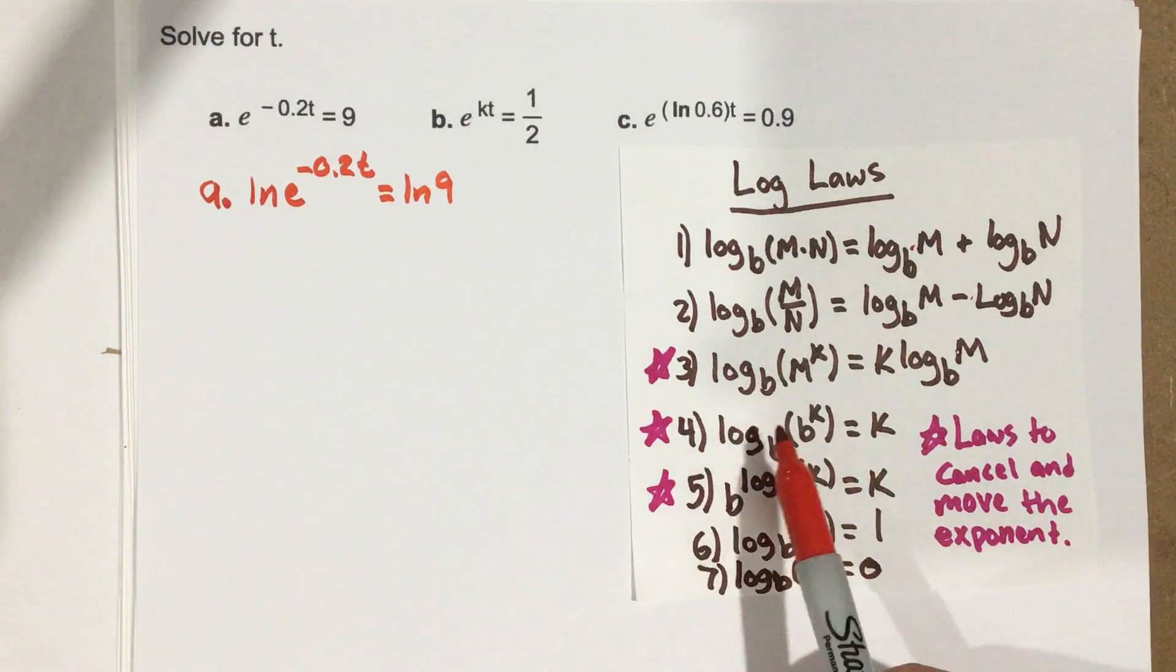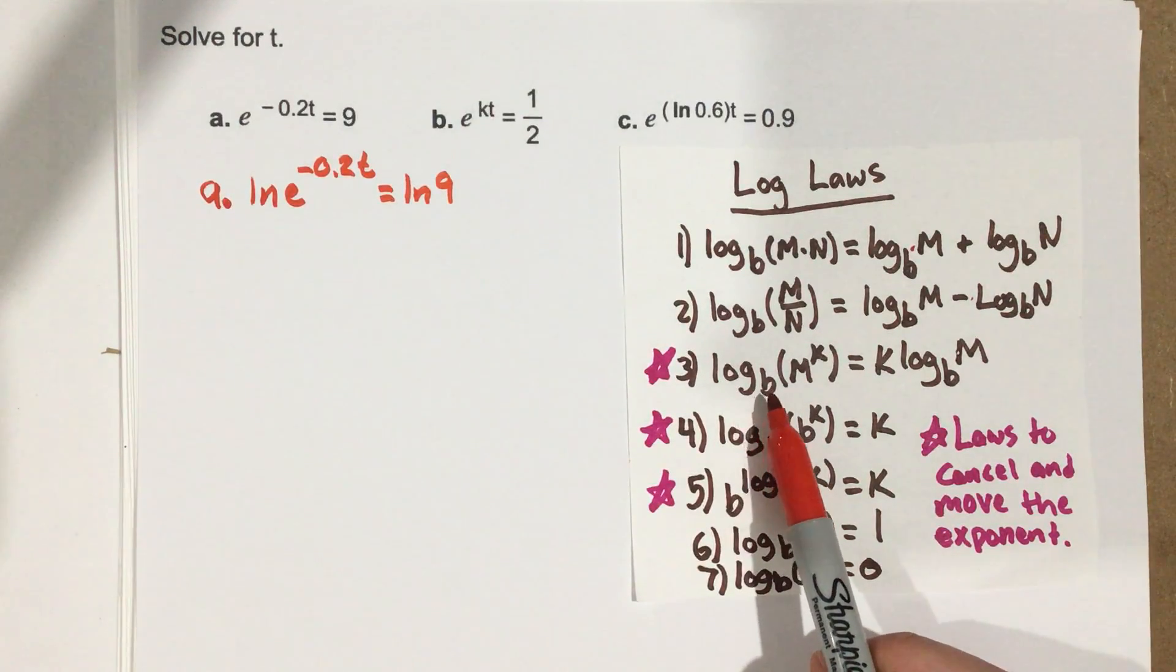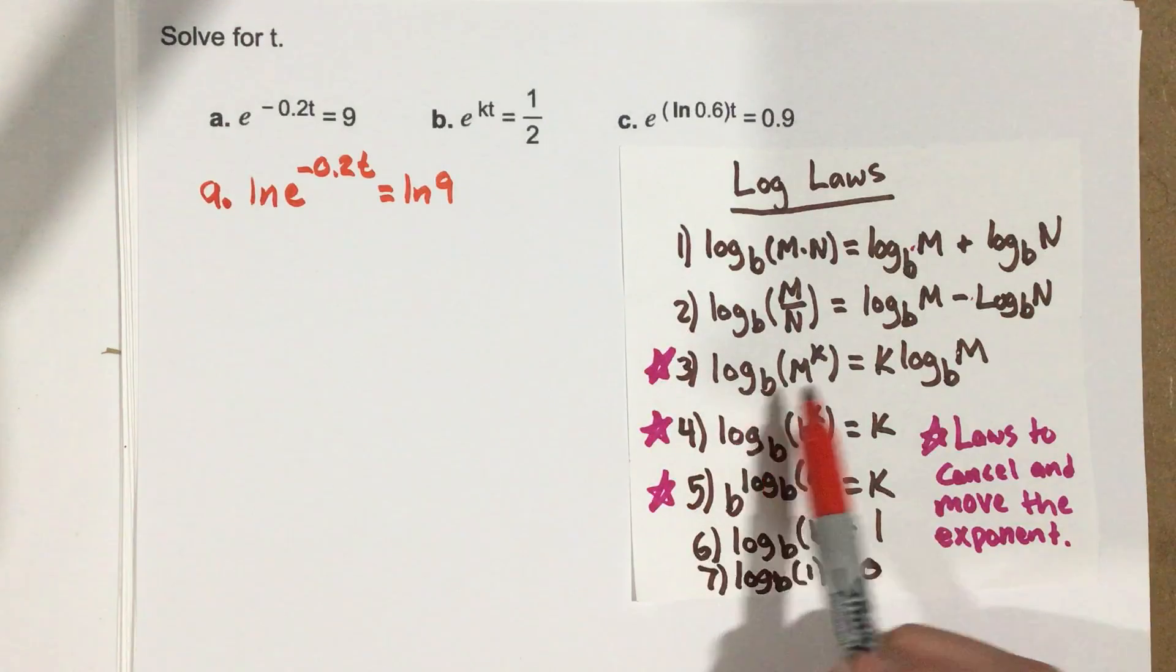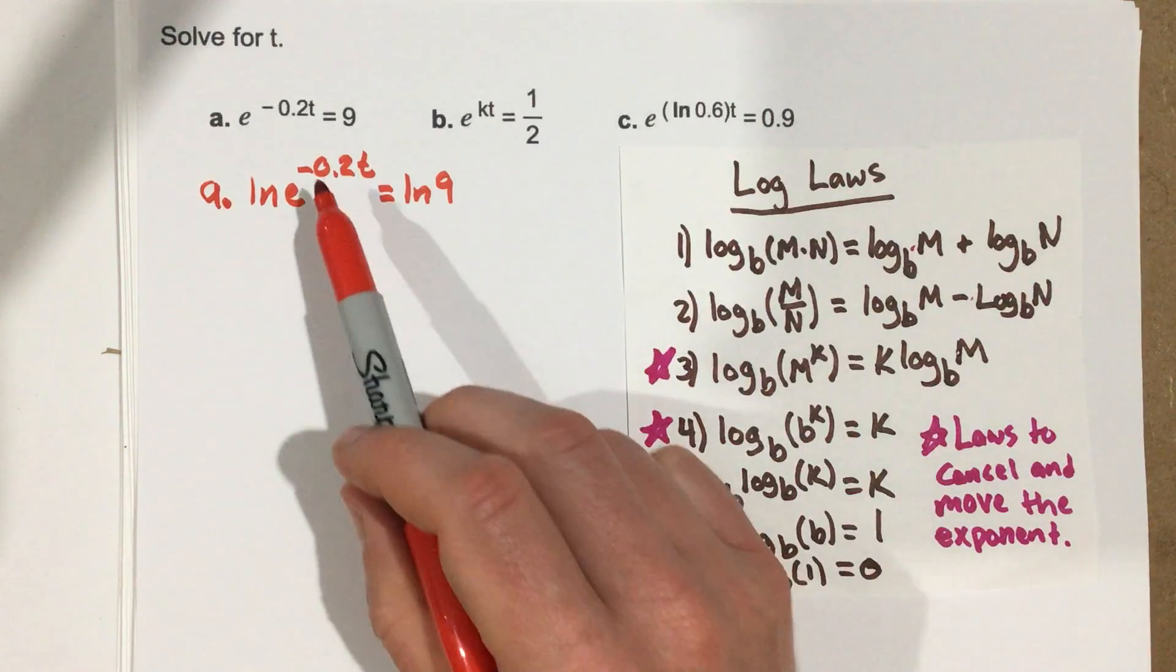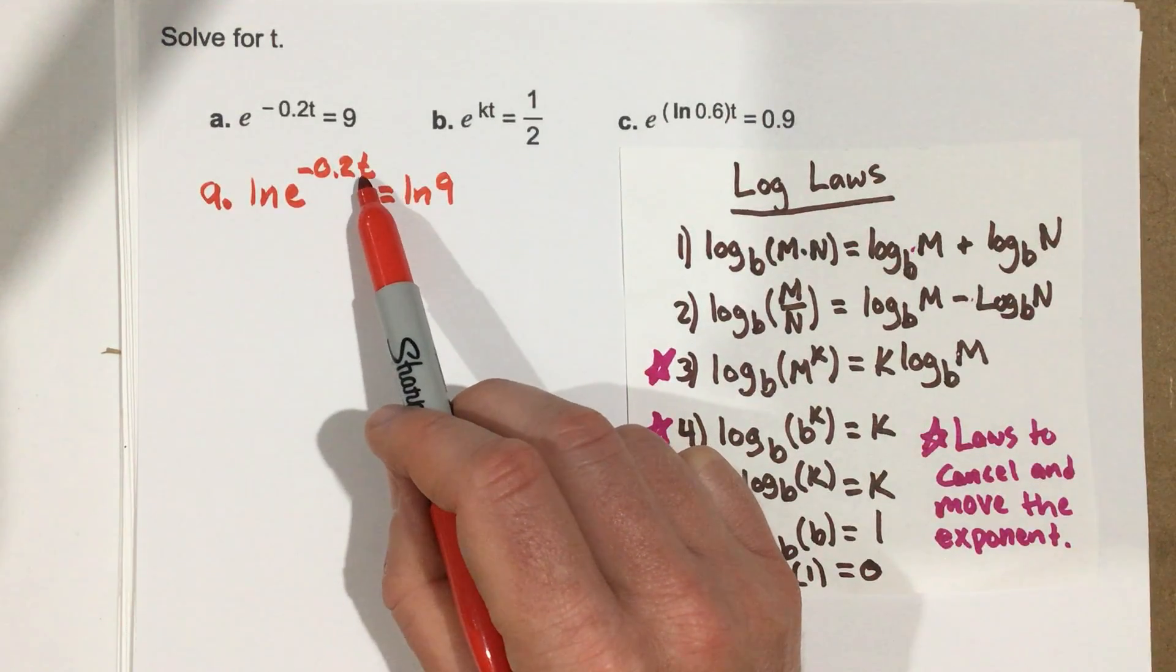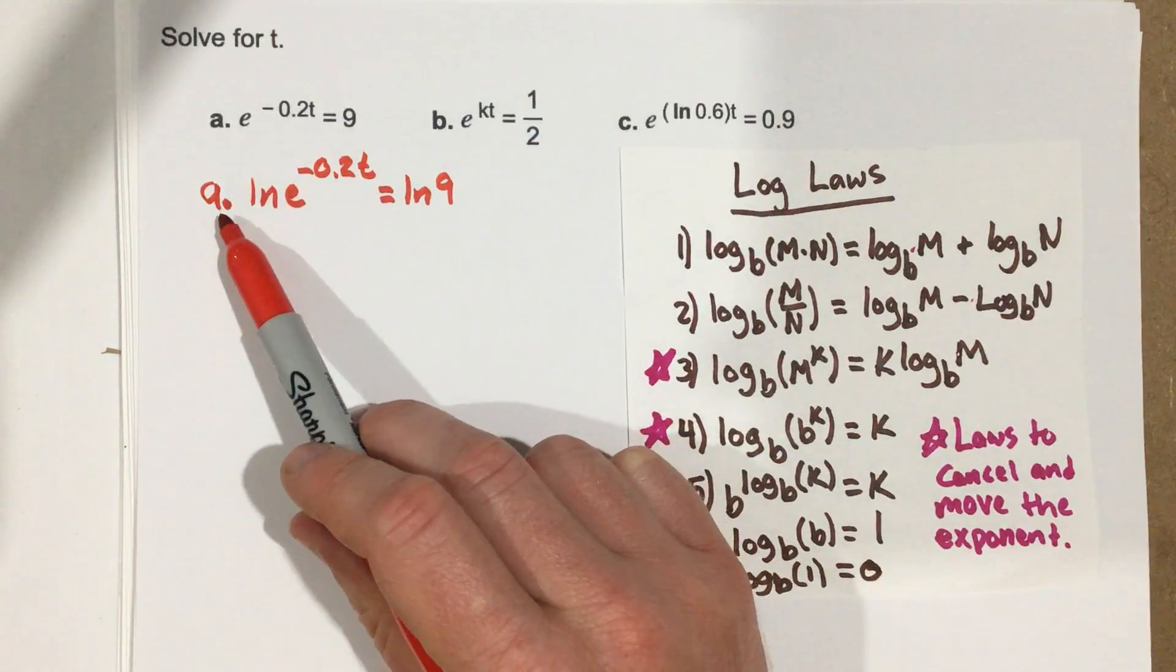Now you'll notice we're in the same spot, right? We have log base, in our case base e, of m with k as our exponent, or our exponent is negative 0.2t. So I can bring that negative 0.2t to the front.